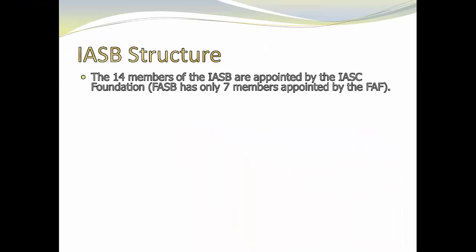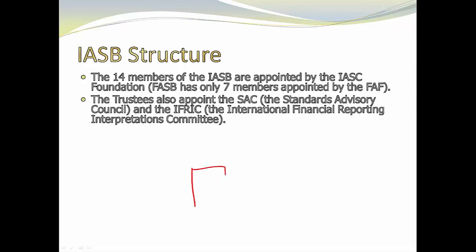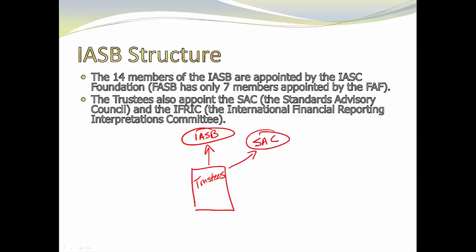The IASB is set up a little bit differently than FASB. FASB is set up with seven members, appointed by the Financial Accounting Foundation. IASB has the same basic idea — there is a foundation governed by a group of trustees. The trustees represent all the different continents, and they appoint the members of IASB and decide who the chairperson is going to be. They've also created a group called the Standards Advisory Council, which gives ideas and suggestions to IASB.